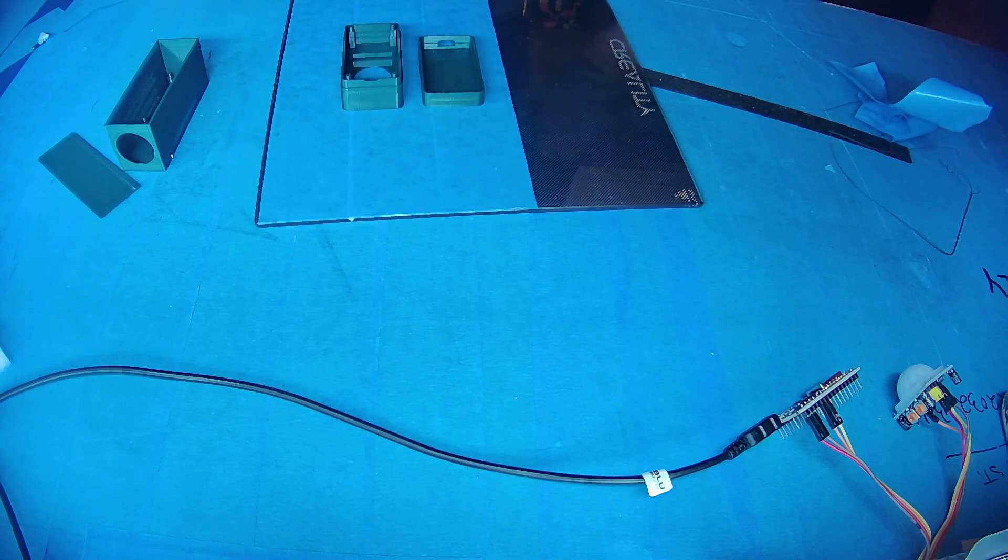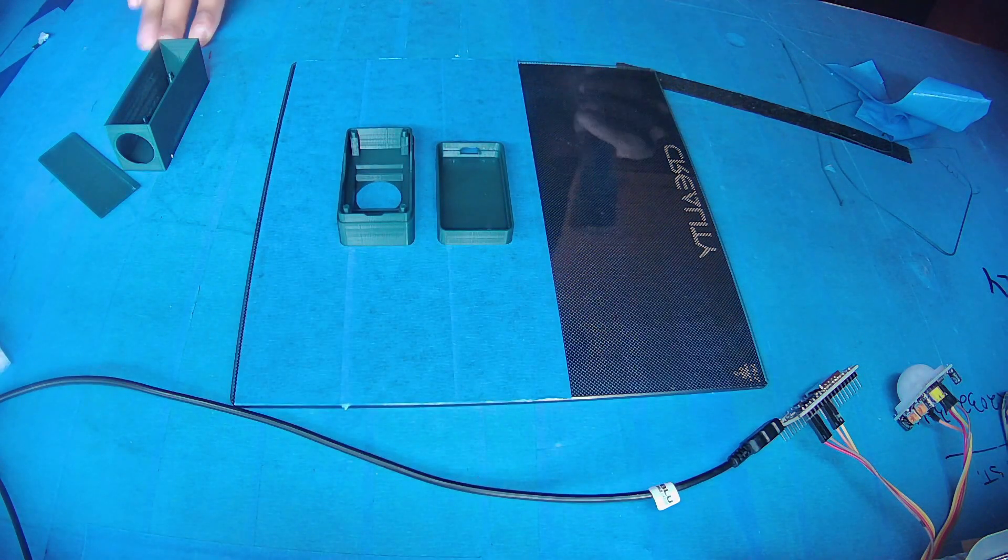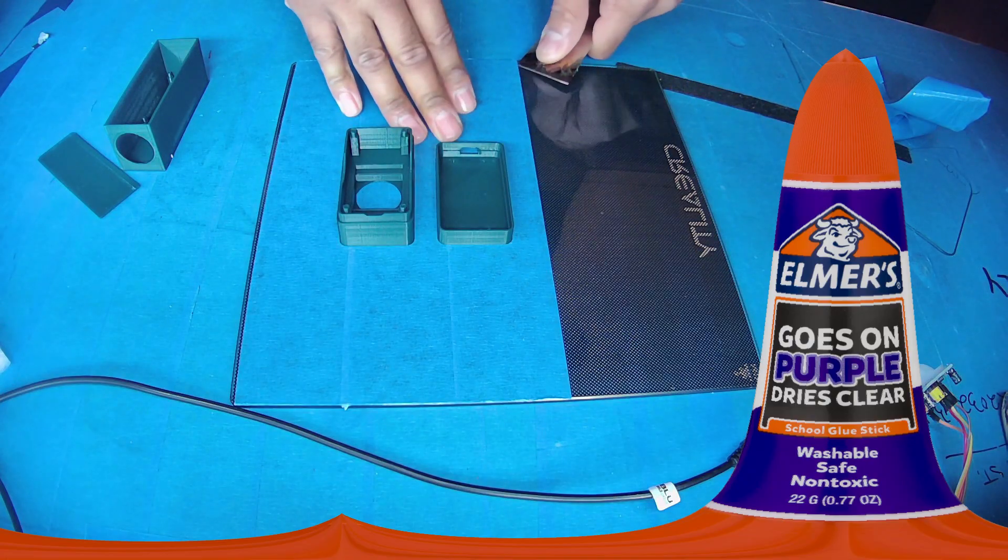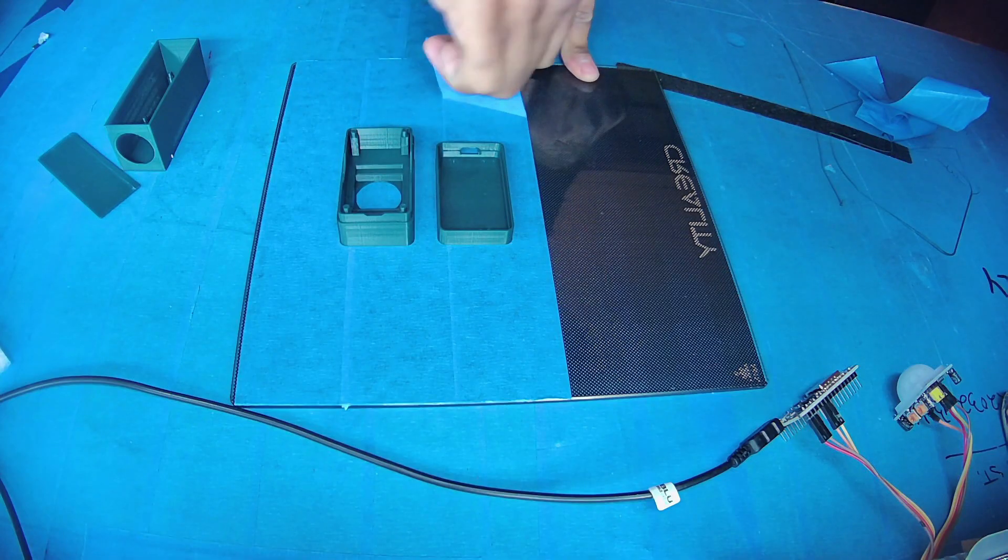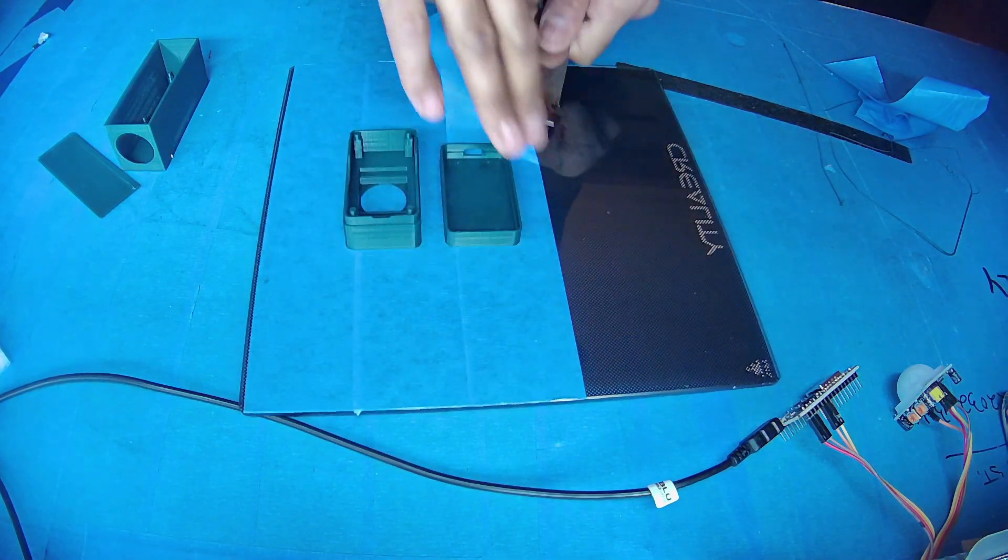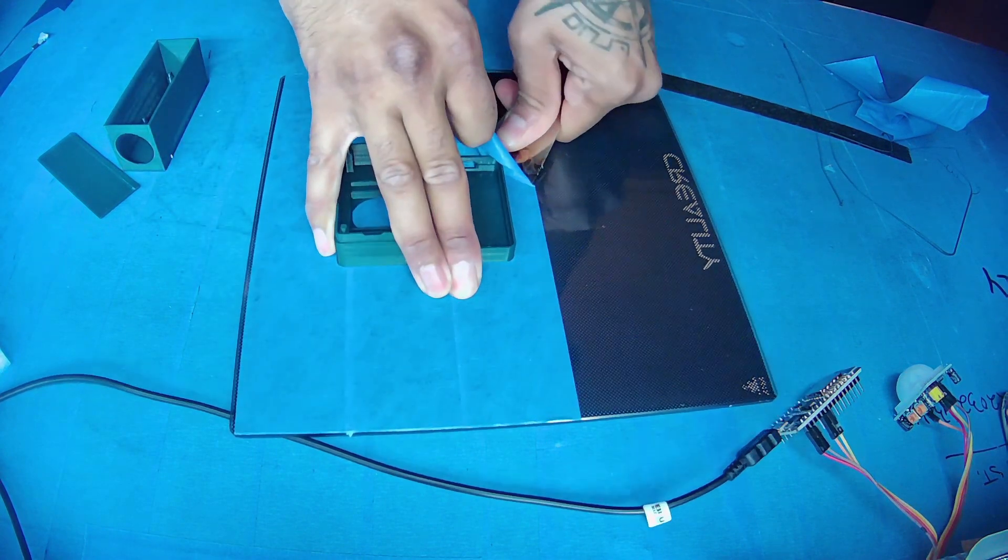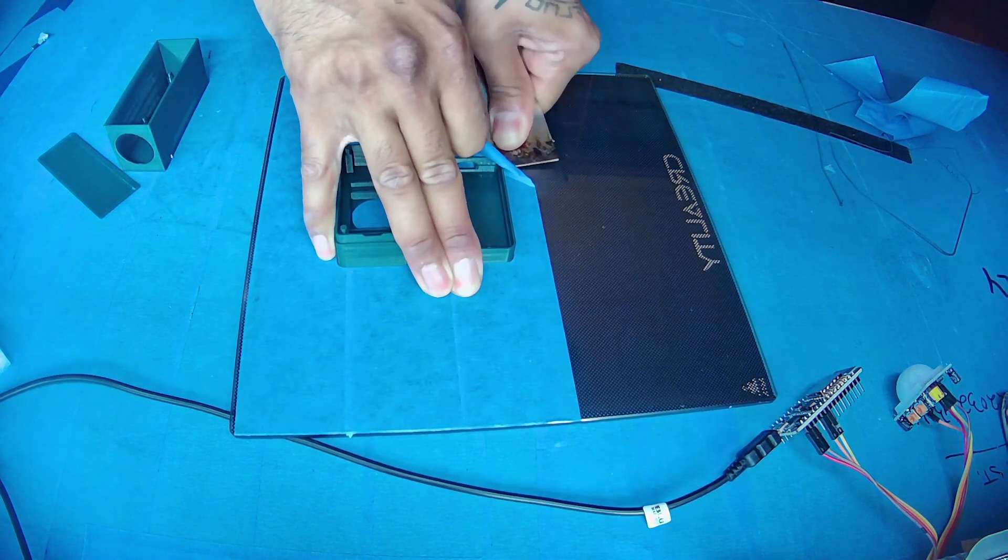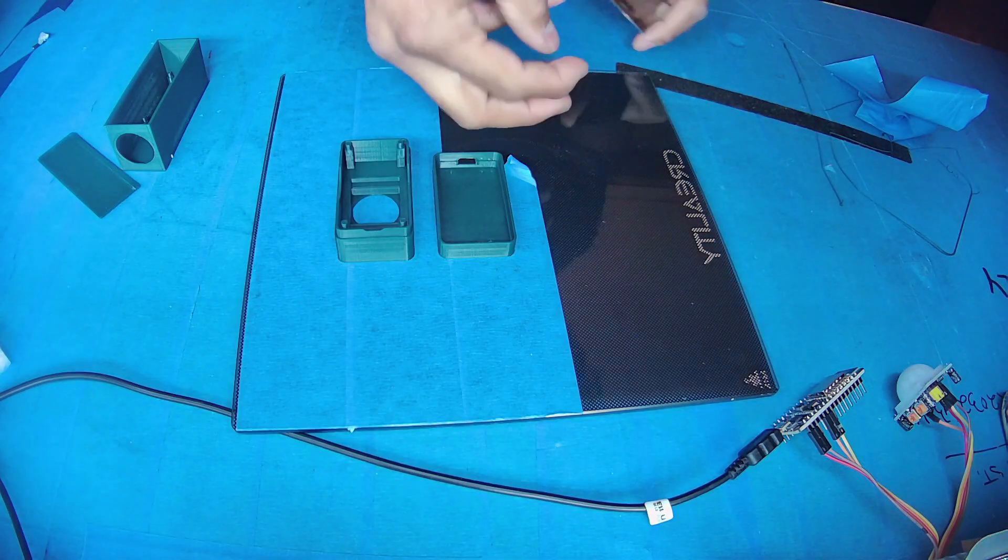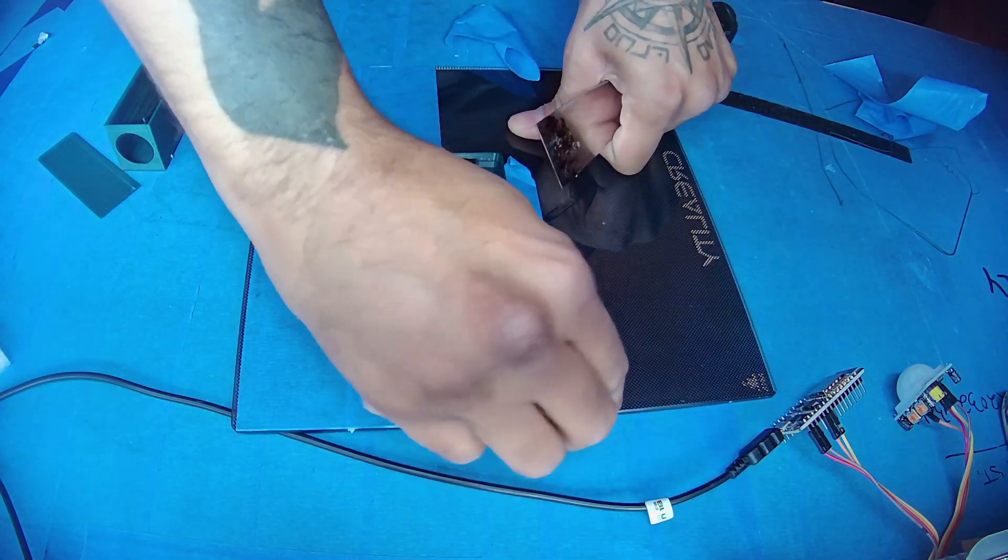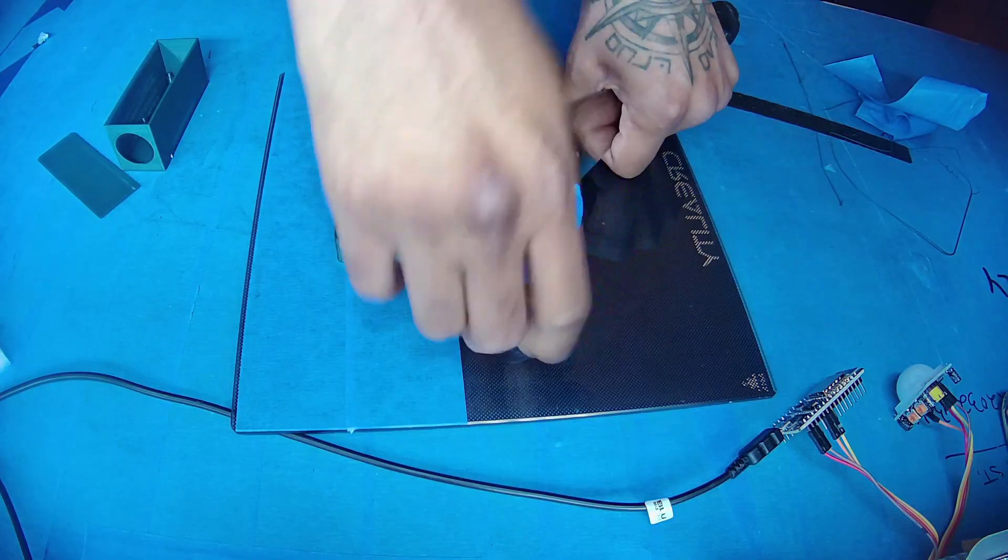One thing I do recommend is using some of the Elmer's invisible glue, the purple glue, or using painter's tape. I do prefer the painter's tape because of cleanup, and with the tape you're able to use it for more than one print. With the glue you have to clean it off after every print and apply a new layer before the next.